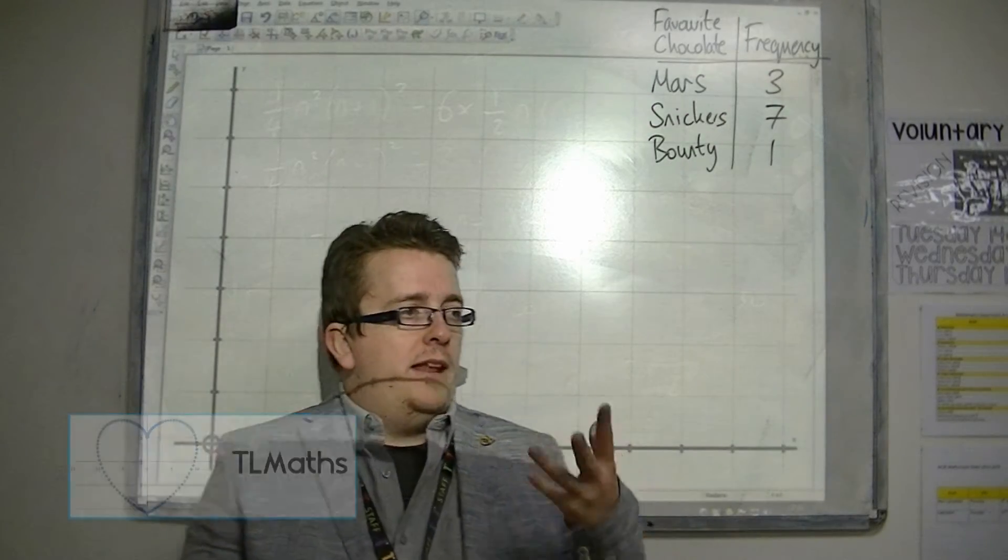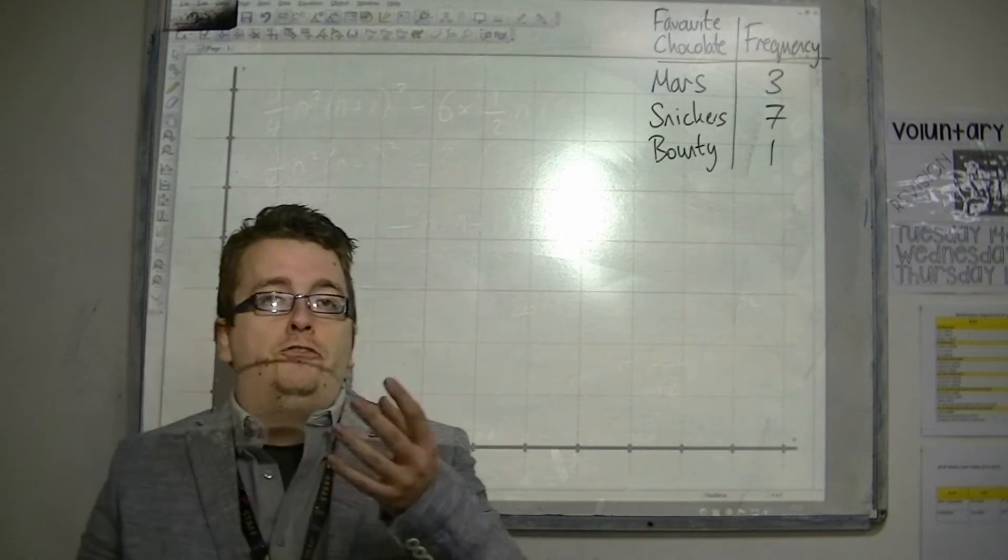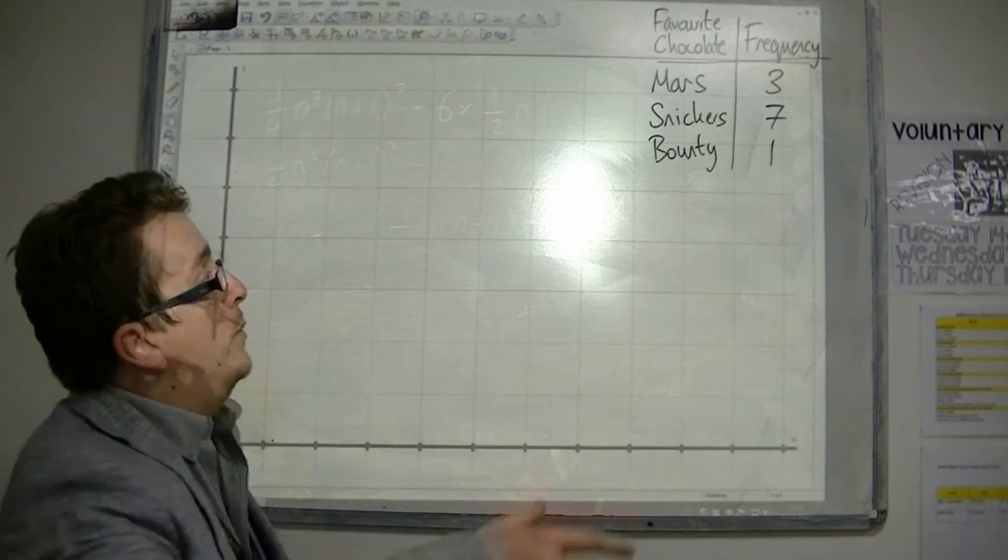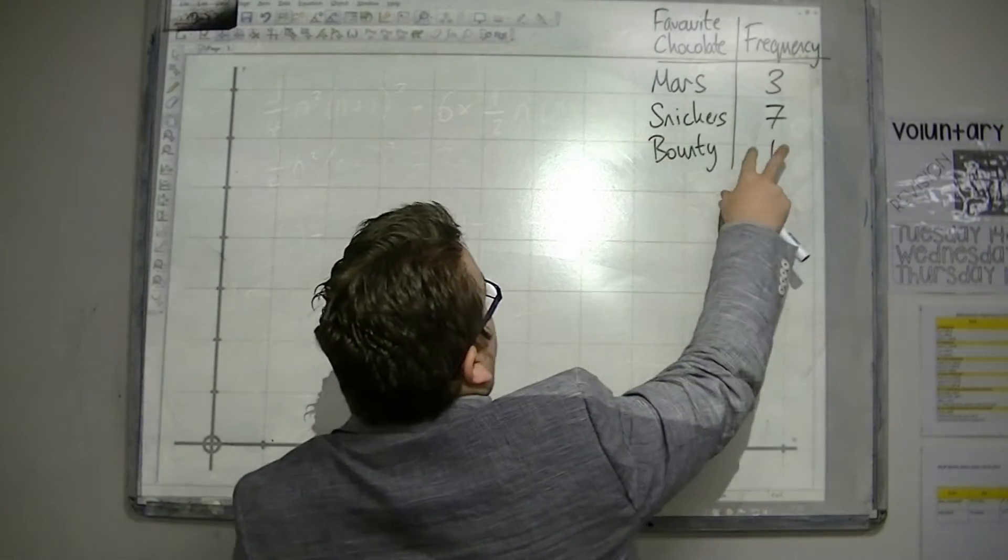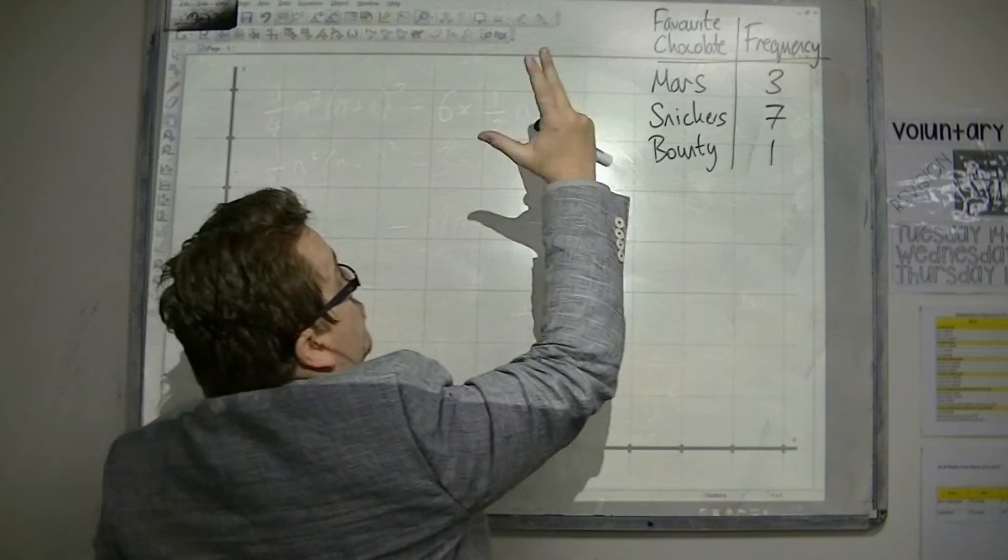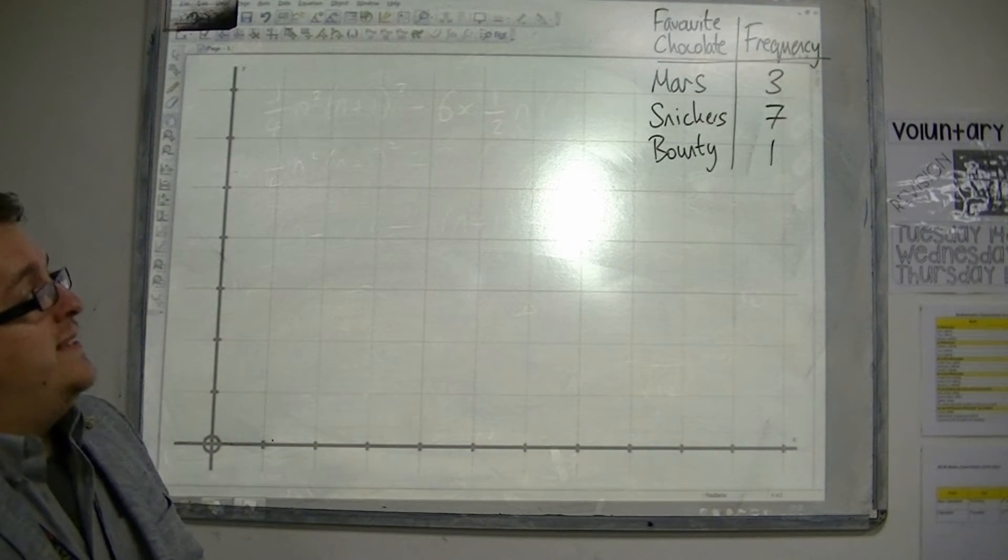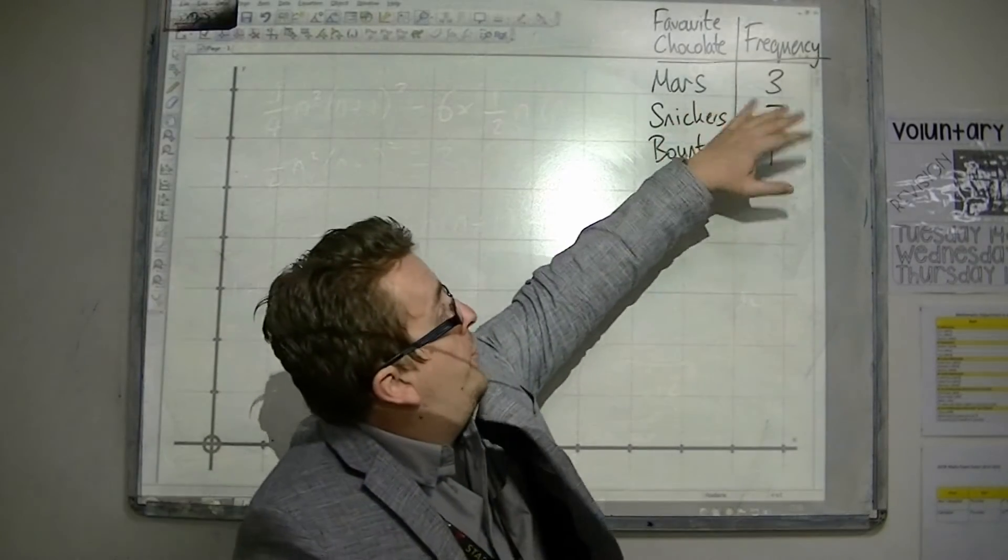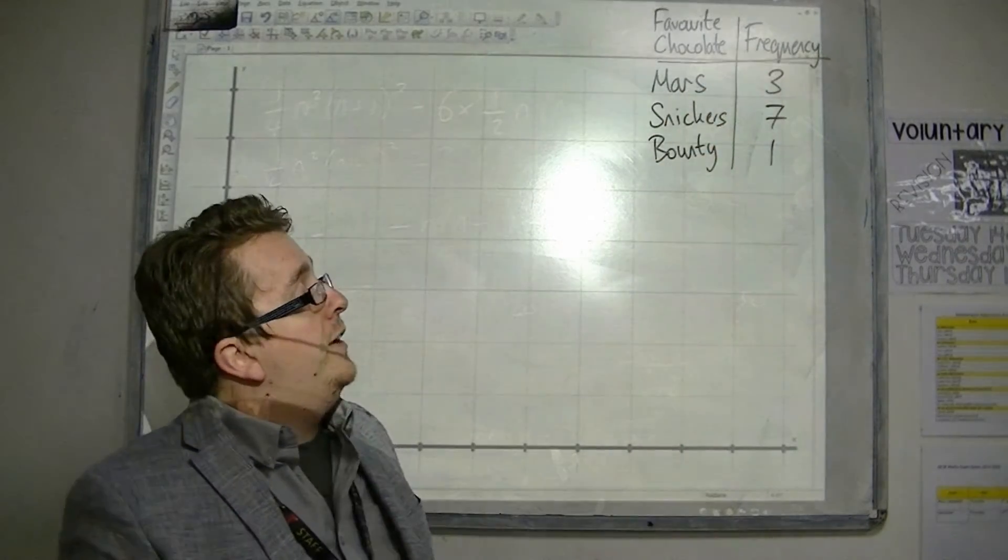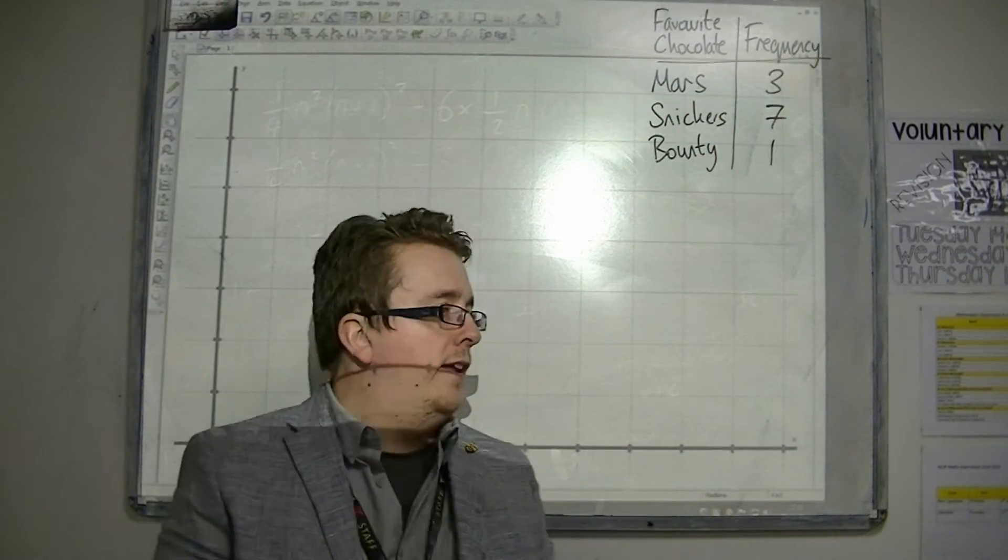Okay, so let's say we are going to draw a bar chart and we're going to work with some very basic data here. We're going to have a favourite chocolate bar: Mars, Snickers or Bounty. I've collected the data and we've got three for Mars, seven for Snickers and one for Bounty because no one likes Bounties.